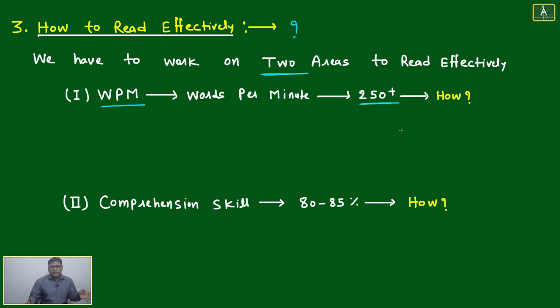Now question is how to achieve it. Next is your comprehension skill - 80 to 85 percent content you should be able to understand. Here a lot of techniques we have to apply: skimming technique, how to get the gist, where main thing will be aligned - all these techniques we have to learn.